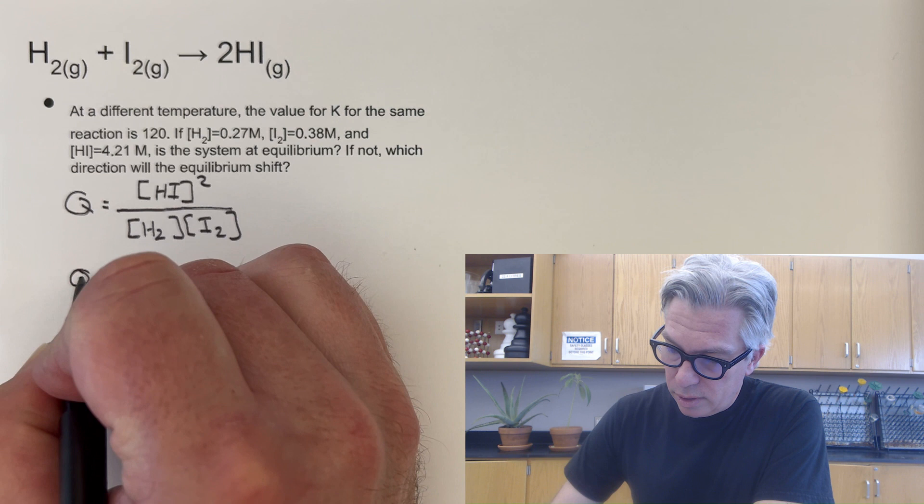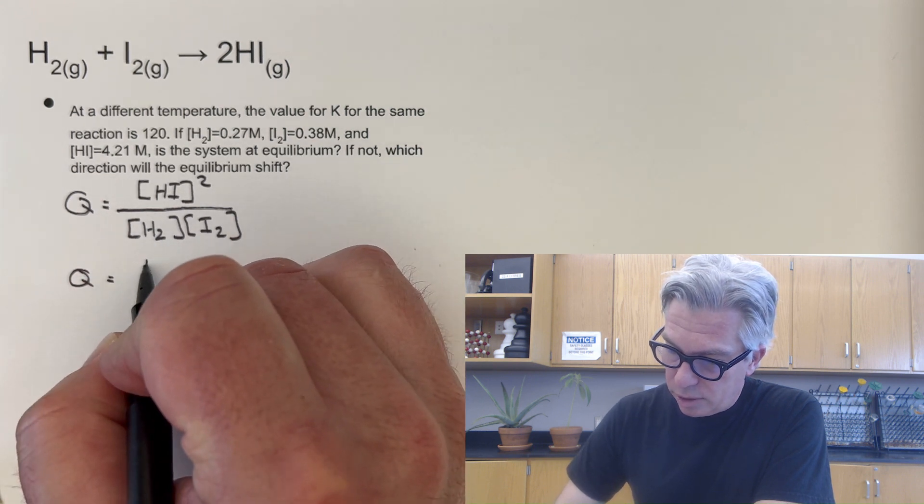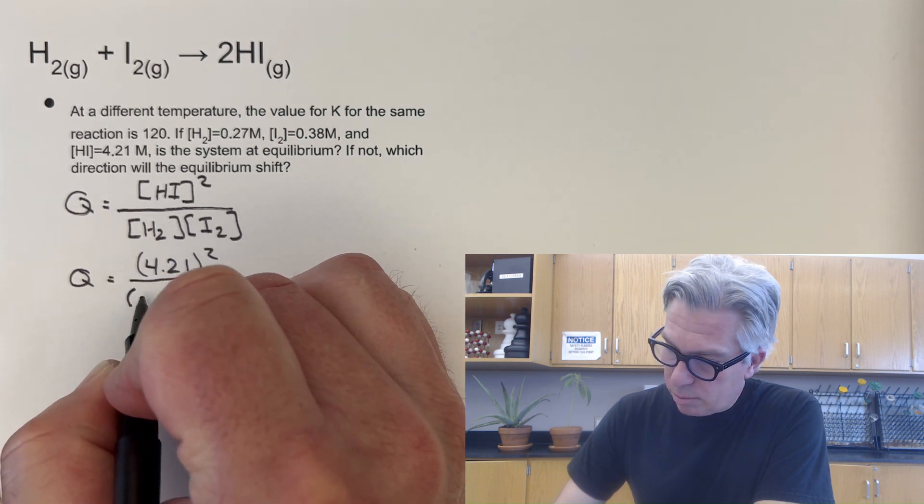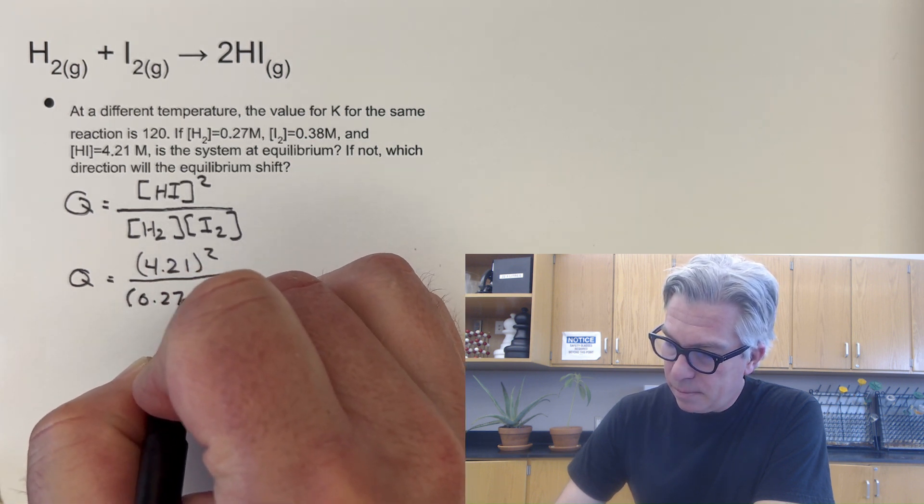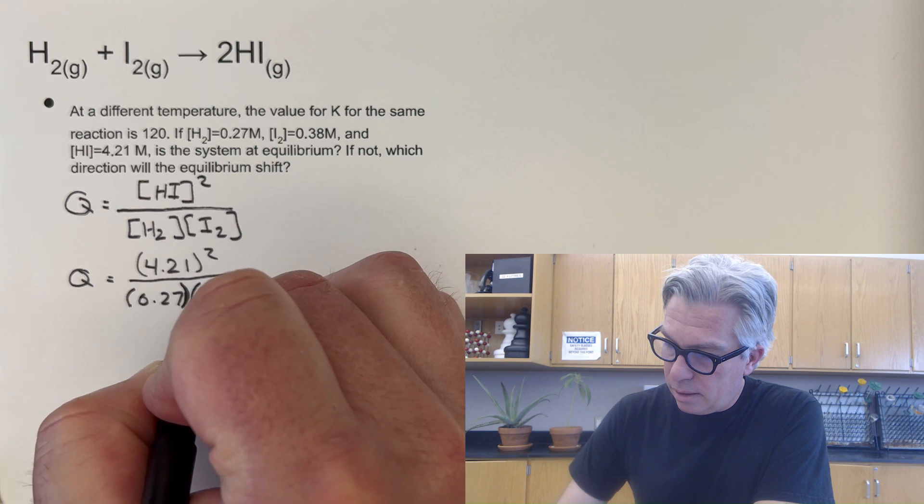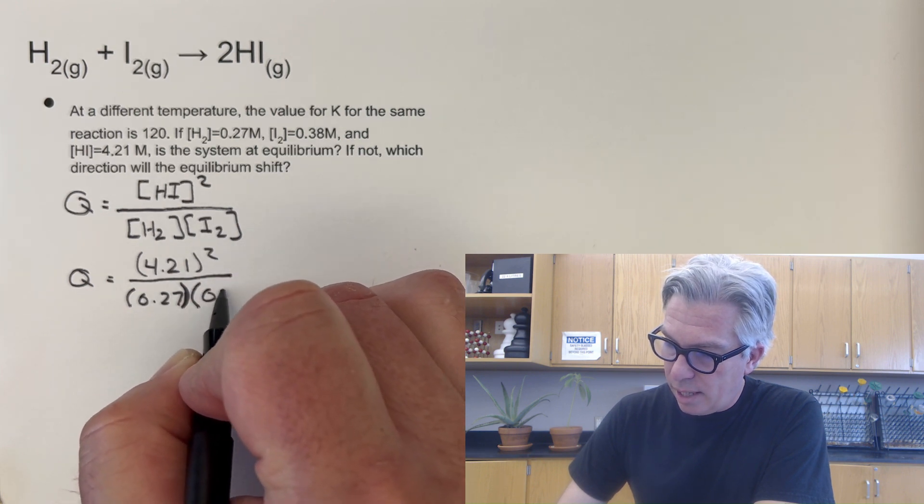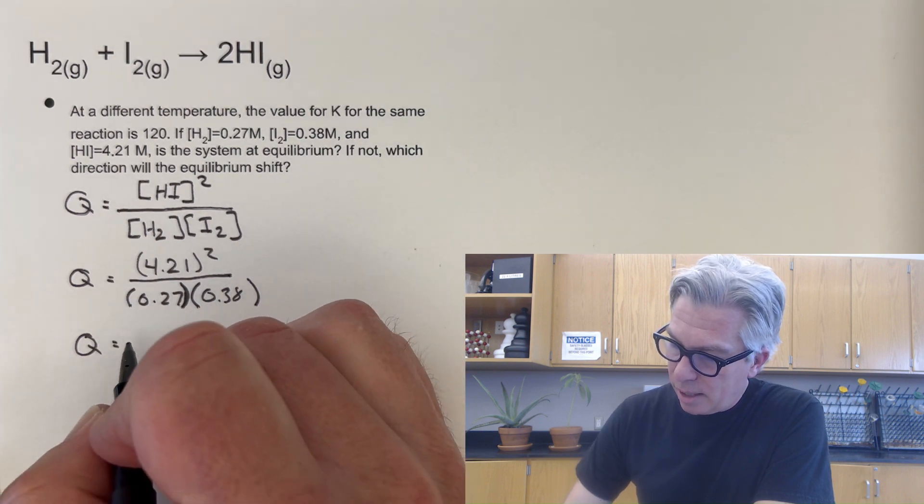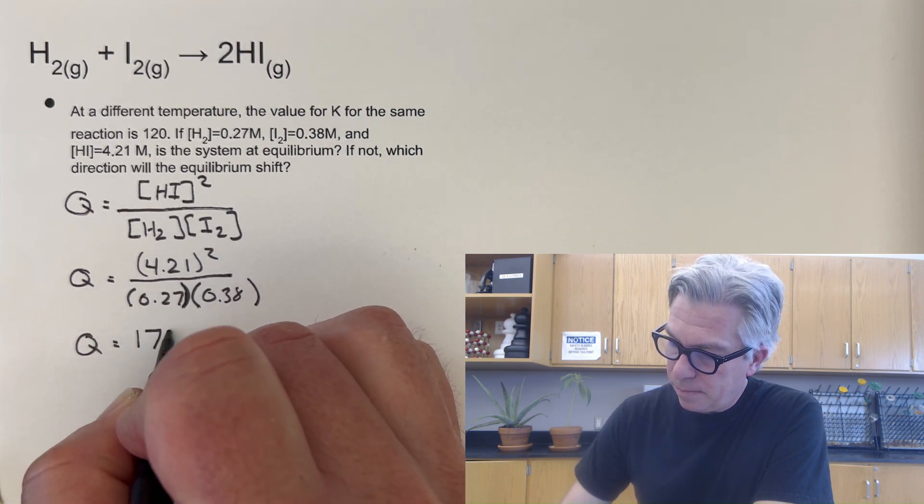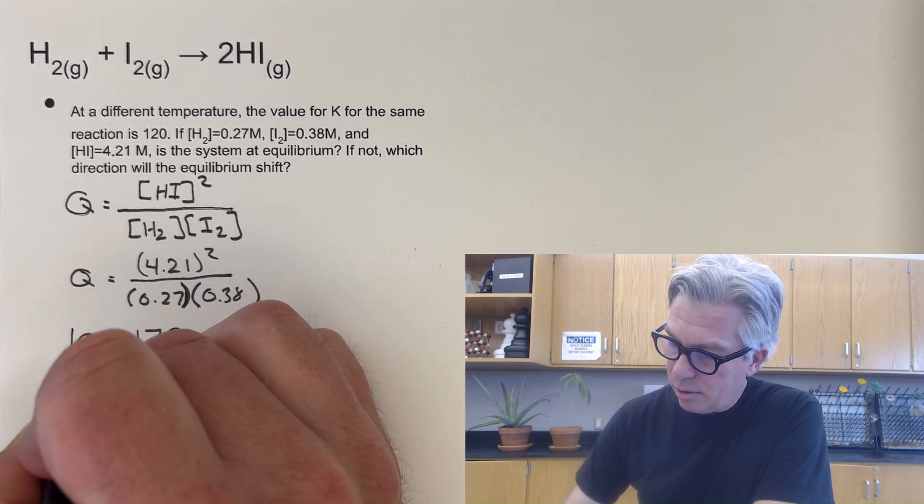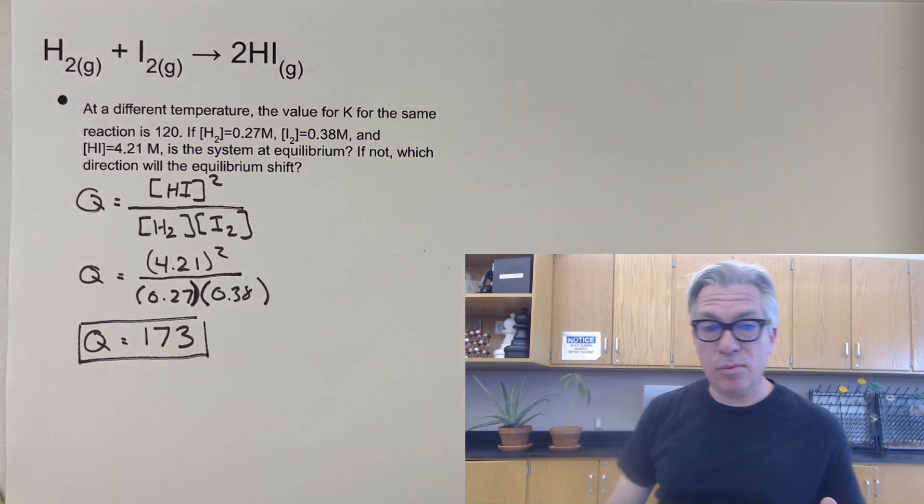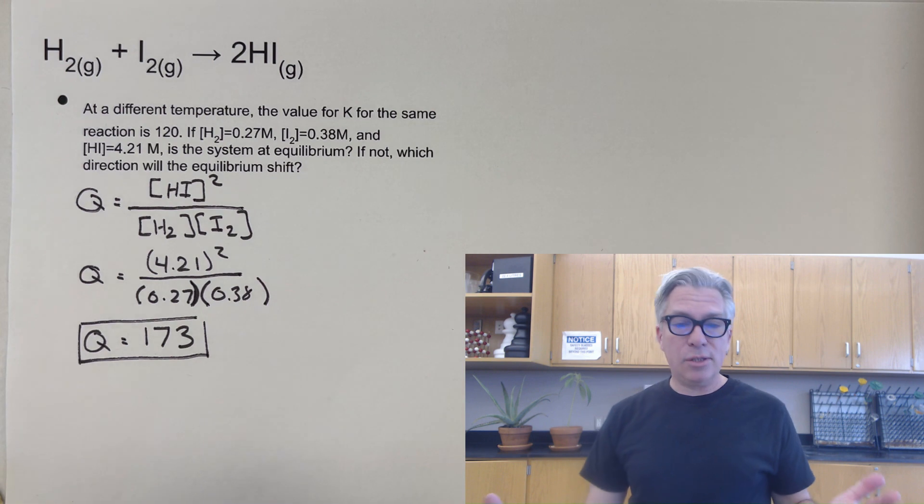So Q equals, HI is 4.21, and we're going to square that. And the H2 is 0.27. And the I2 is 0.38. Okay, now if I plug that into my calculator, I get a value of 173. Okay, great. I got it. I got a number. Awesome.